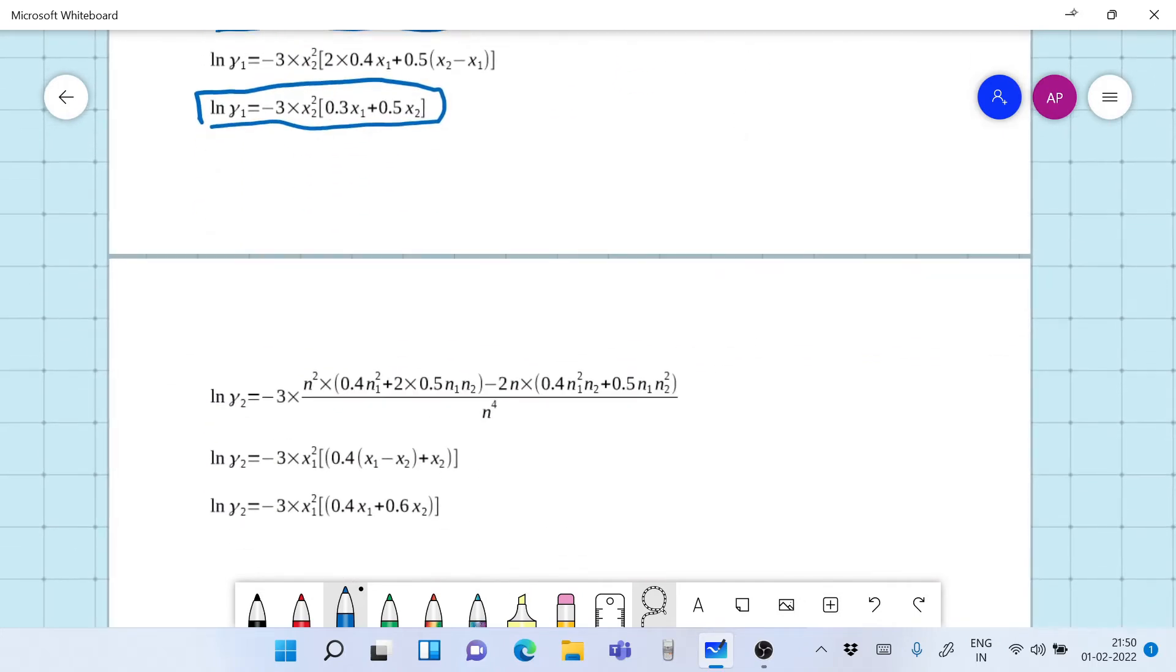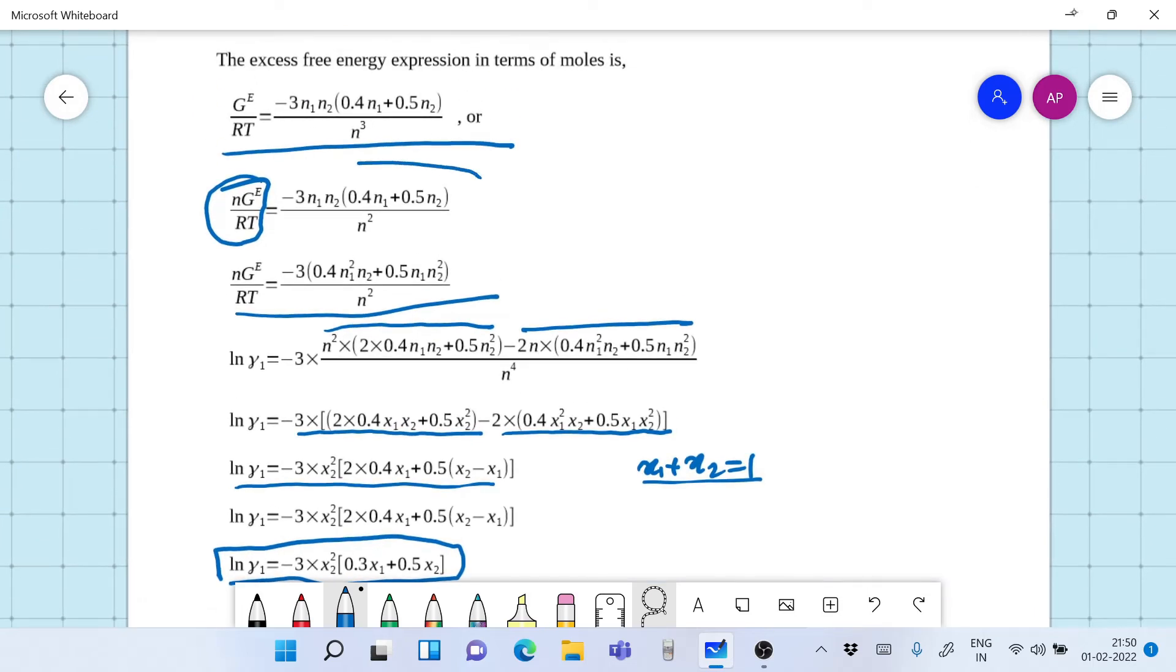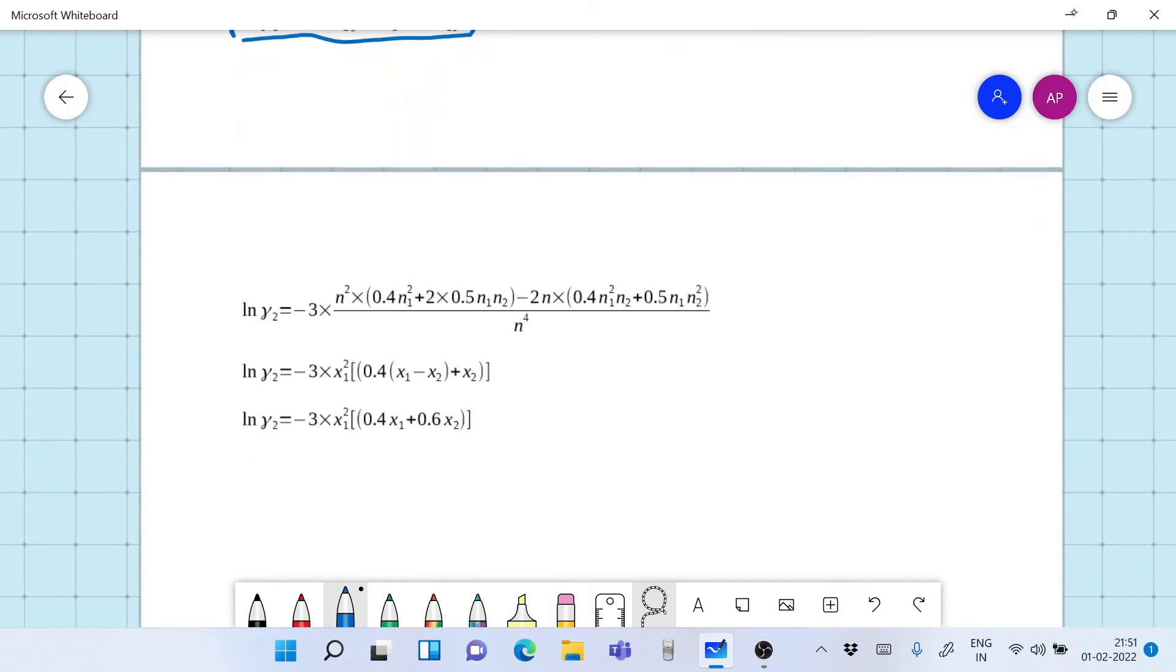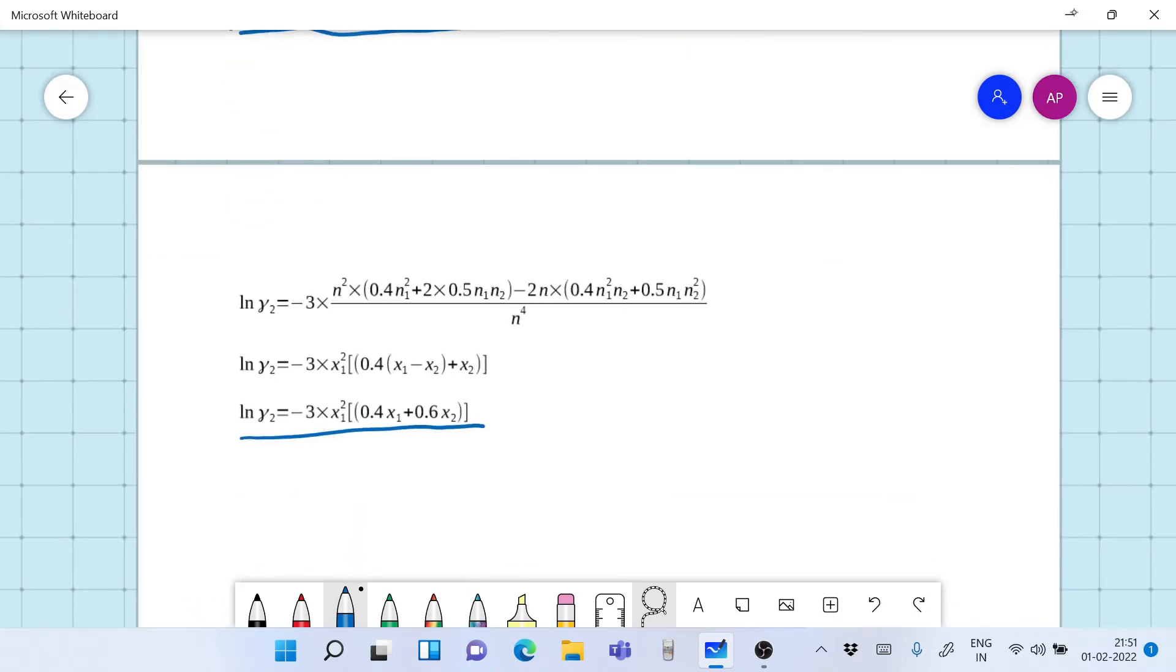Now once you do the similar thing that is differentiate this expression with respect to n2 to get ln gamma 2, we get the expression and we simplify it and we get the expression for ln gamma 2. So as you can see here we have the expression for ln gamma 1 and ln gamma 2.